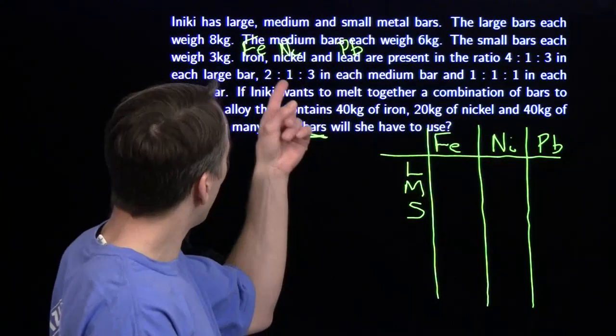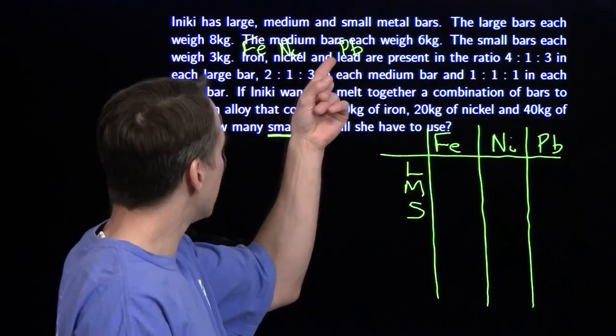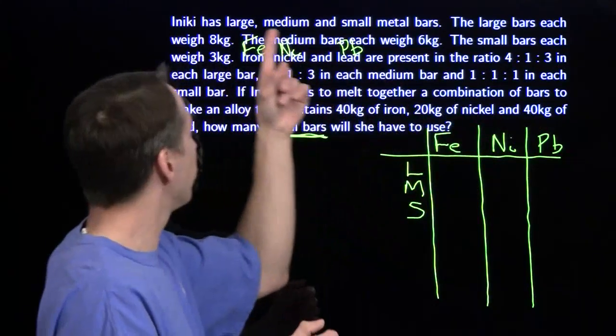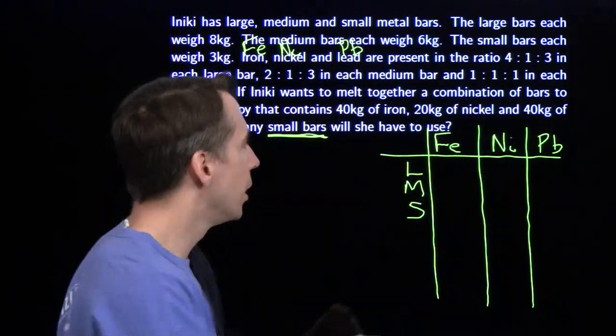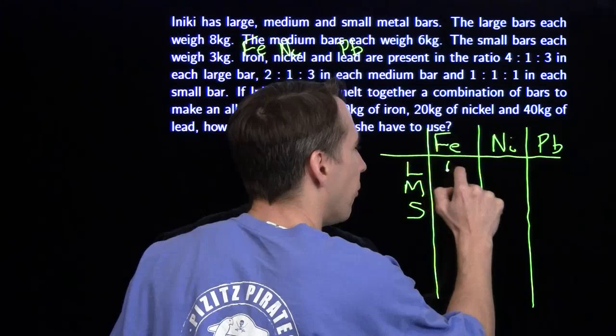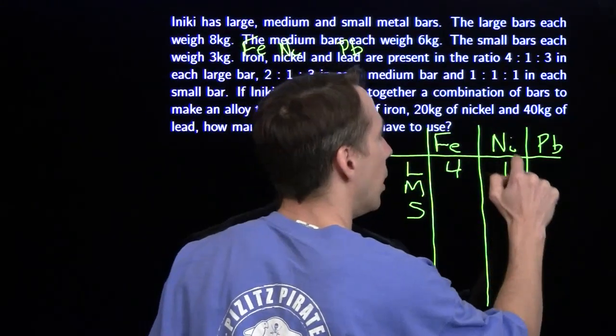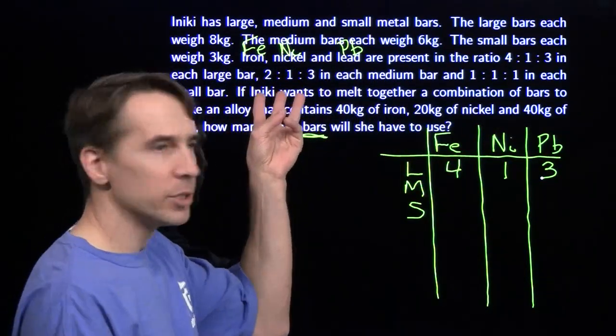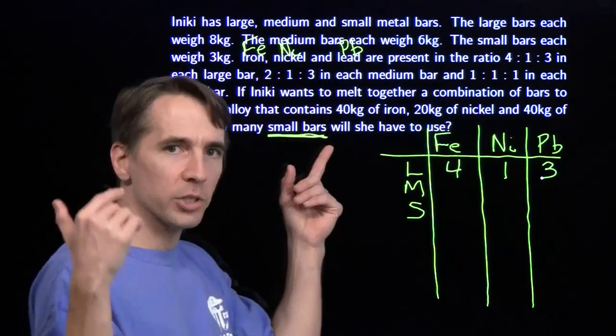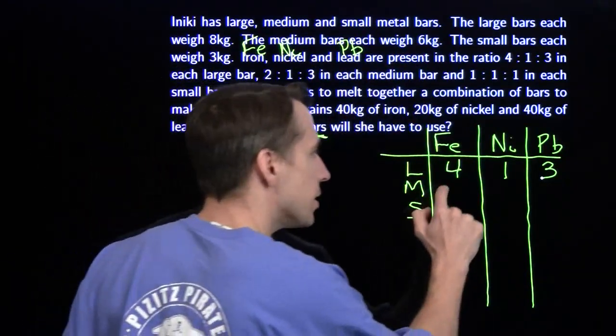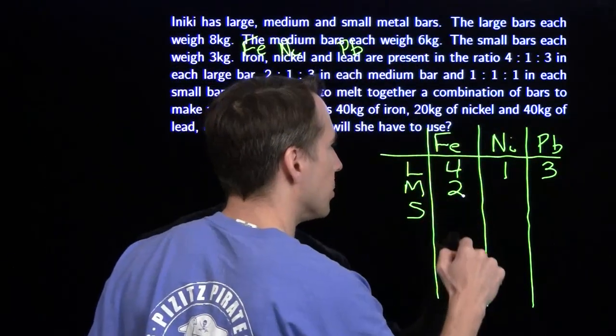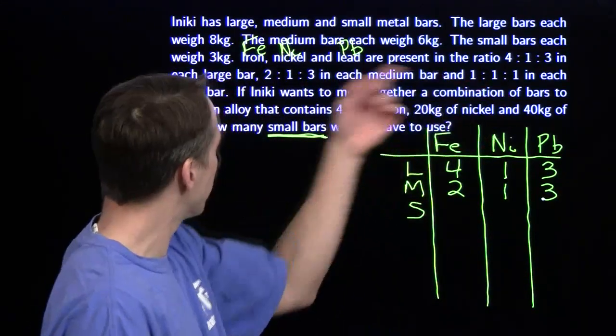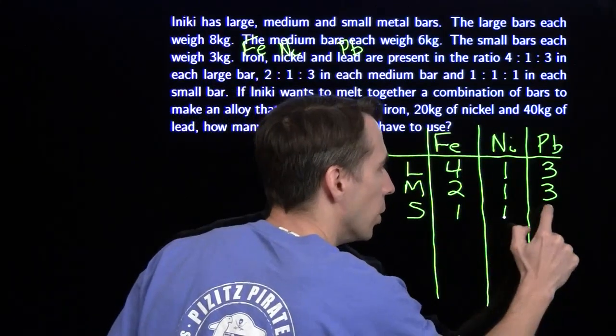Let's start with the large bars. Iron to nickel to lead is 4:1:3. Conveniently, 4 + 1 + 3 equals 8, which is how much each of these large bars weighs. So we have 4 kilograms of iron, 1 kilogram of nickel, and 3 of lead. The same thing happens for the medium bars. 2:1:3, and 2 + 1 + 3 is 6, so we have 2 kilograms of iron, 1 kilogram of nickel, and 3 of lead.